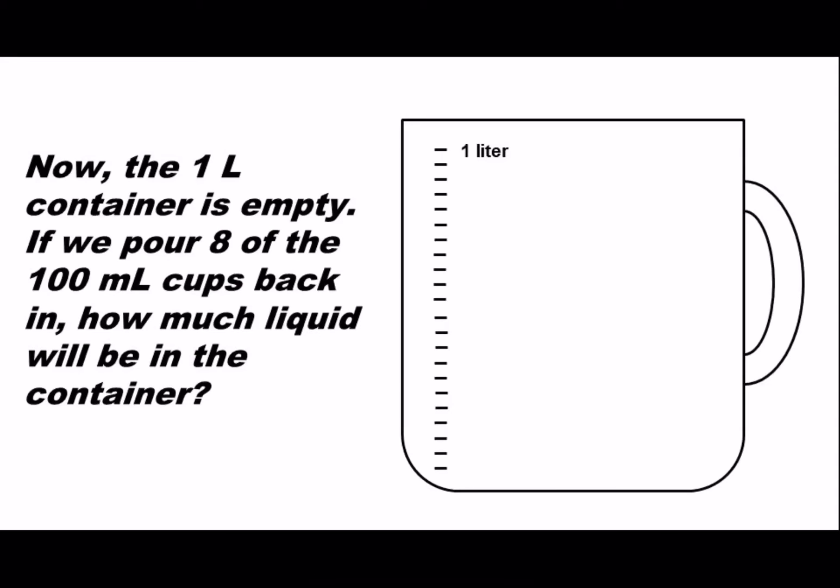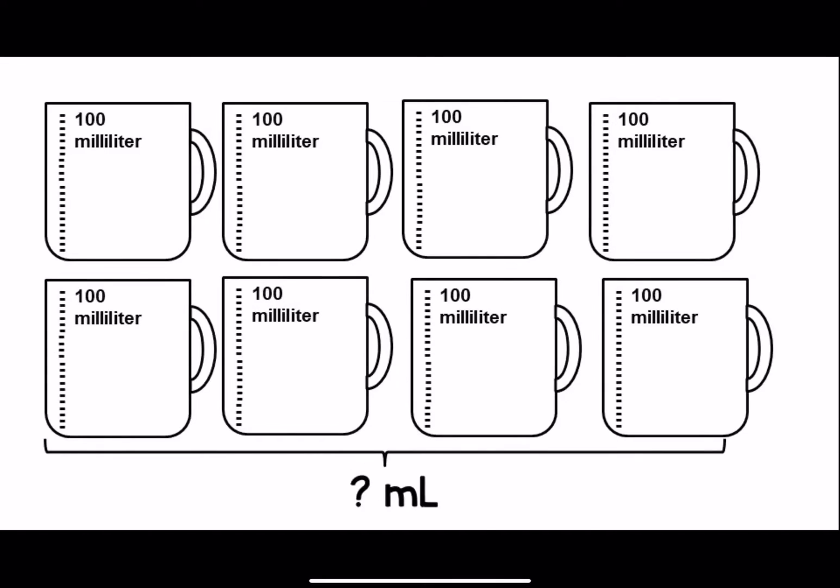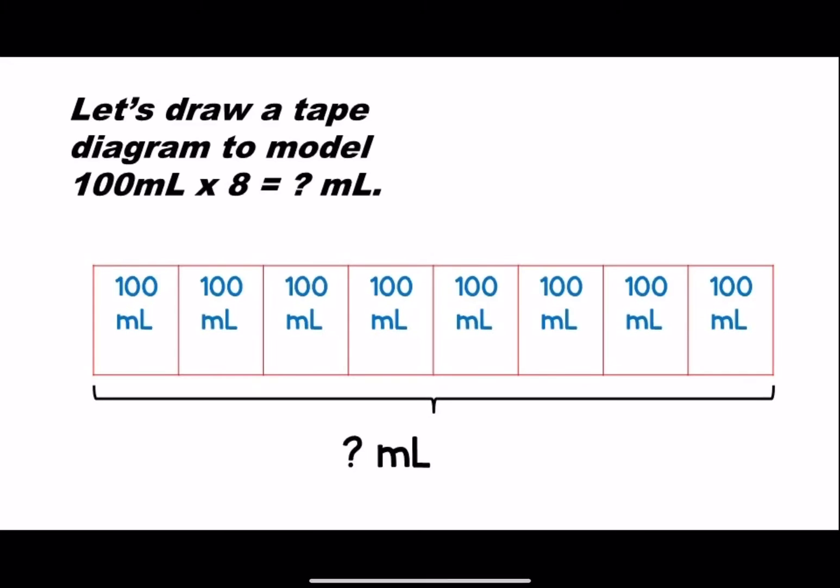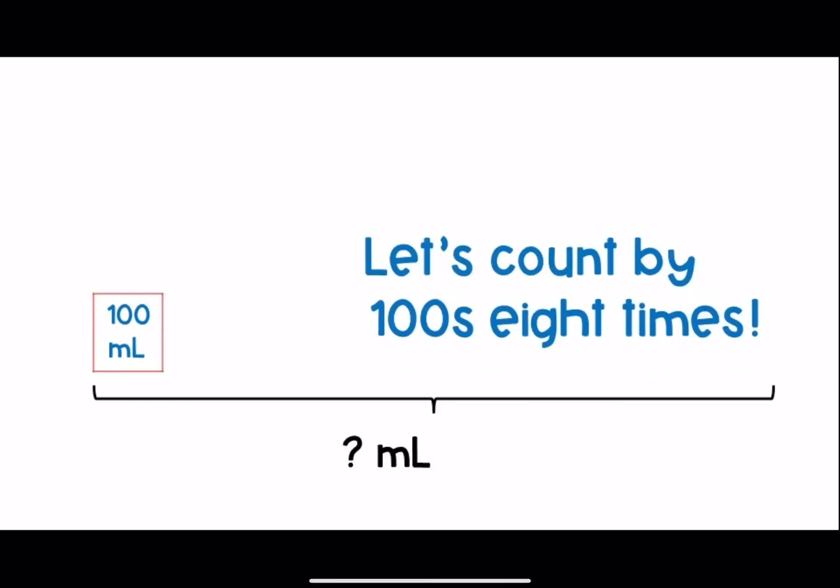Now that we've poured out all of the liquid, the container is empty. If we pour eight of the 100 milliliter cups back in, how much liquid will be in the container? Here are eight containers with a capacity of 100 milliliters each. We want to know how many milliliters are in all. We can draw a tape diagram to model 100 milliliters times 8.